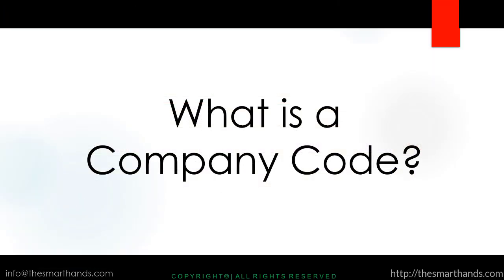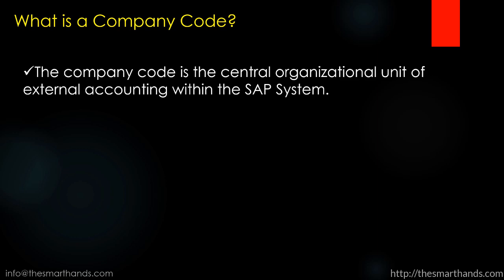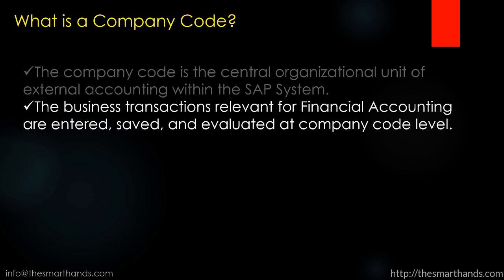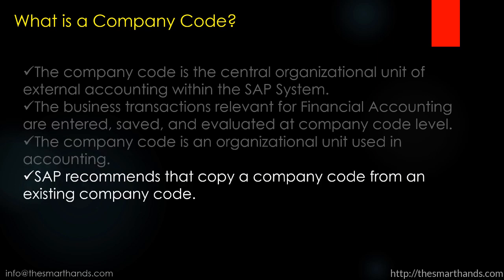So what is a company code? The company code is the central organizational unit of external accounting within the SAP system. The business transactions relevant for financial accounting are entered, saved, and evaluated at the company code level. The company code is an organizational unit used in accounting. SAP recommends that you copy a company code from an existing company code, and in a real-time scenario, usually a FICO consultant will be customizing the company code.